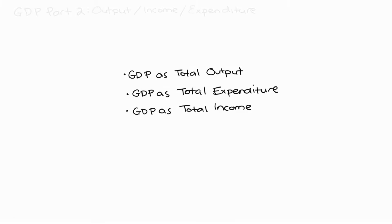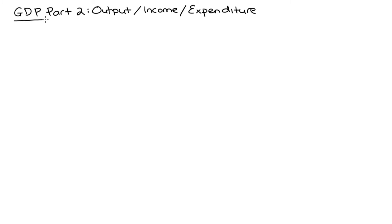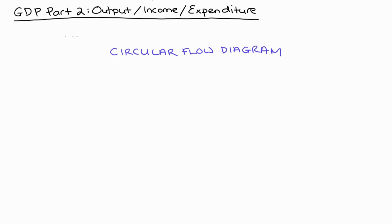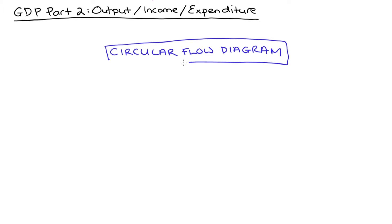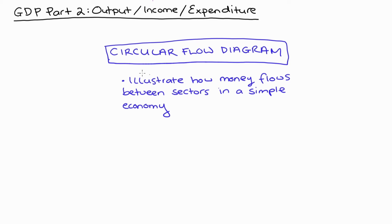This is actually the second video in a series of videos that I'm doing on GDP. The first video was all about defining GDP, and the next video will be on measuring GDP. This video is all about the equivalence of output, income, and expenditure. Textbooks will often motivate the equivalence of these three things using what we call a circular flow diagram, and I'm just going to follow their lead on that. These diagrams can be a bit abstract, but one of the things that they illustrate is how money flows between sectors in a very simplified economy.